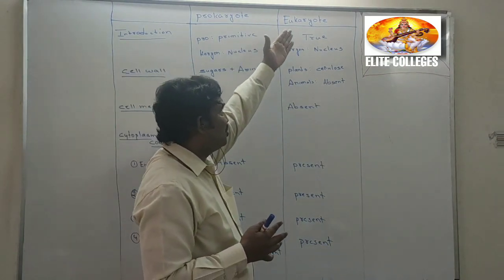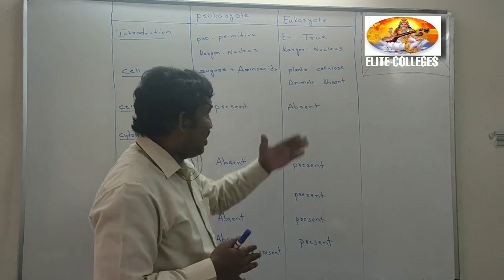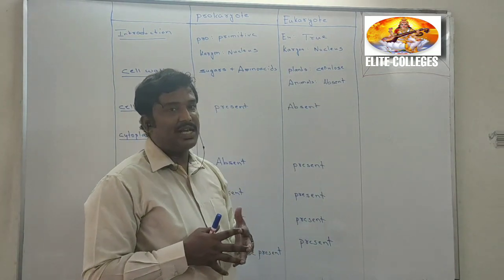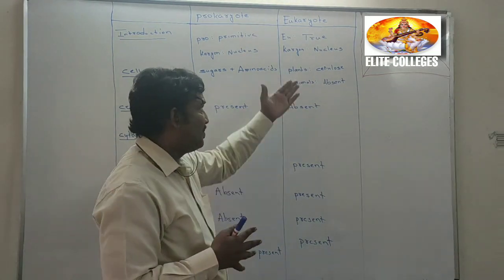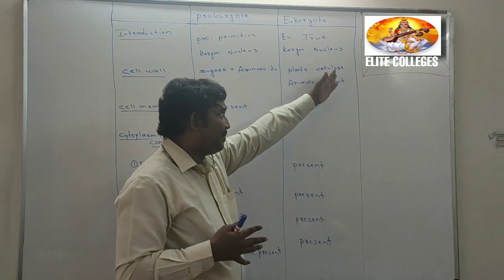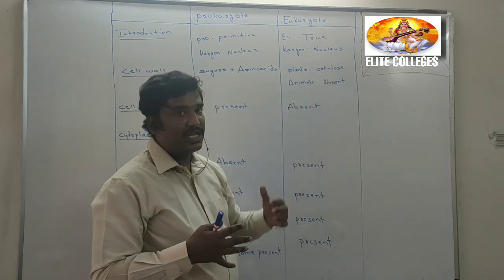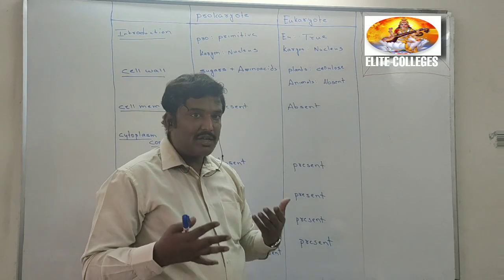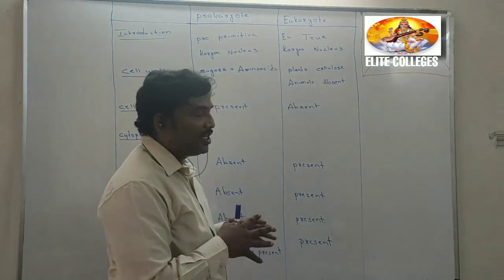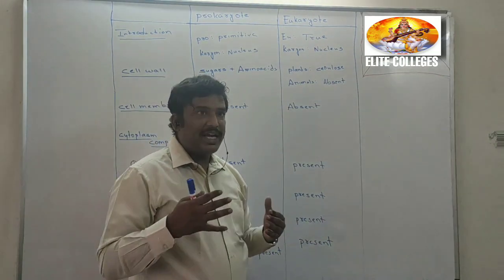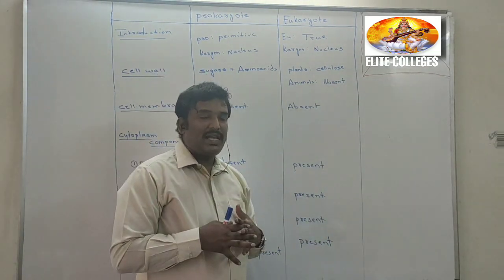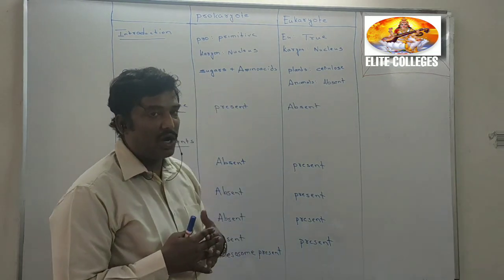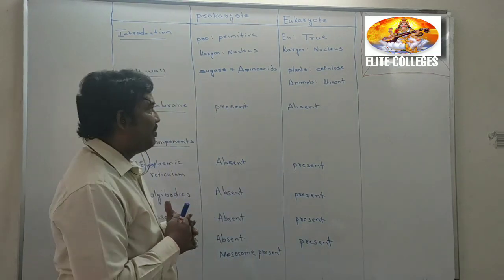If you see the composition of eukaryotes — looking at plants — the plant has a thick cell wall, and the major component of this cell wall is cellulose. In the case of animals, the cell wall is totally absent. Instead, the animal cell is protected by a specialized membrane called the cell membrane.